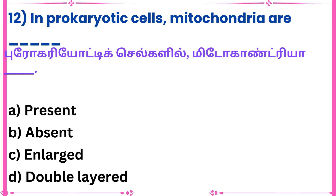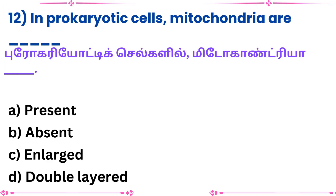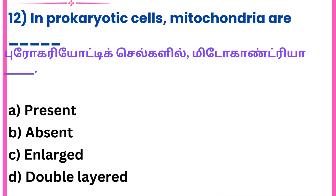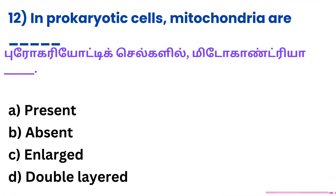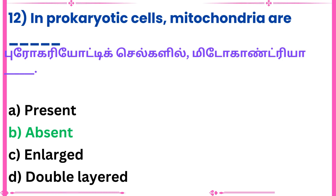Twelfth question: In prokaryotic cells, mitochondria are dash. Answer: Absent.